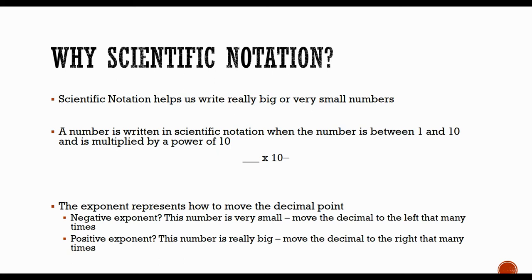When you're writing in scientific notation, the number in the front is going to be something between 1 to 10. It's a small value that we can look at and then it's always going to be multiplied by a power of 10.